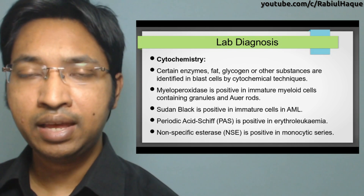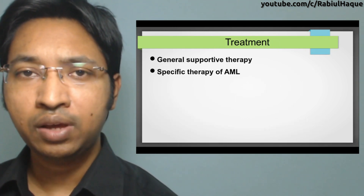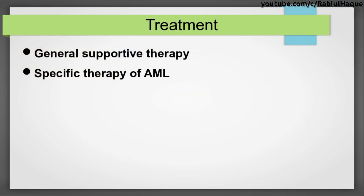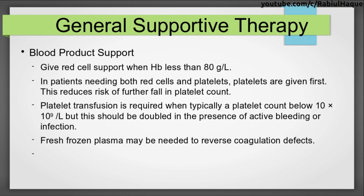Treatment of AML is divided into general supportive therapy and specific therapy. General supportive therapy includes insertion of a central venous catheter — done via a skin tunnel from the chest into the superior vena cava for patients needing intensive treatment, providing ease of access for administering chemotherapy, antibiotics, blood products, and intravenous feeding — along with blood product support and prophylaxis and treatment of infections.